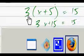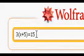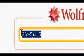And here is Wolfram Alpha's interpretation of the same. 3 times x plus 5 equals 15.